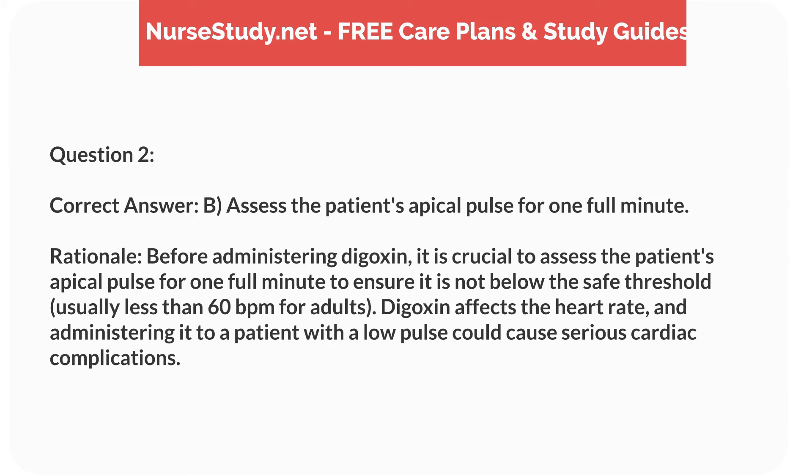Correct answer: B. Assess the patient's apical pulse for one full minute. Rationale: Before administering digoxin, it is crucial to assess the patient's apical pulse for one full minute to ensure it is not below the safe threshold, usually less than 60 beats per minute for adults. Digoxin affects the heart rate, and administering it to a patient with a low pulse could cause serious cardiac complications.